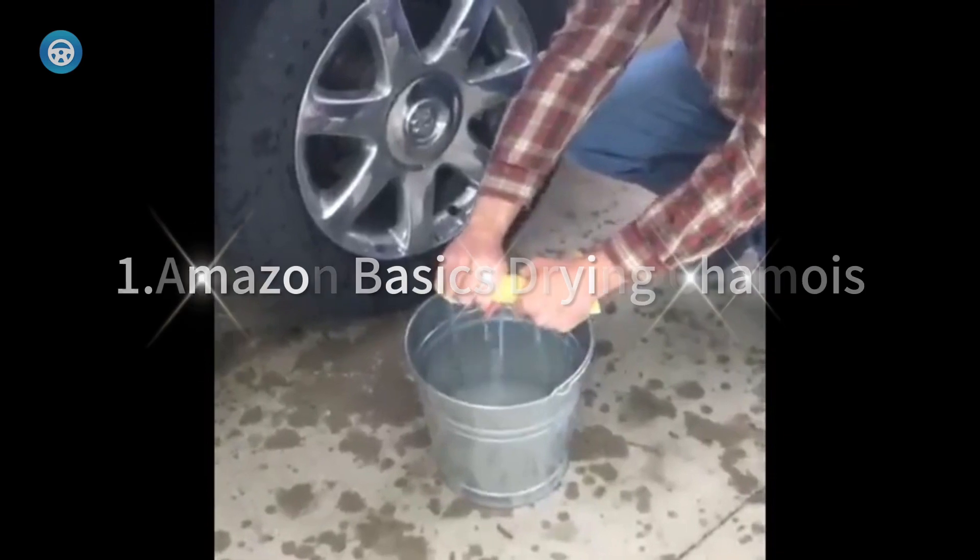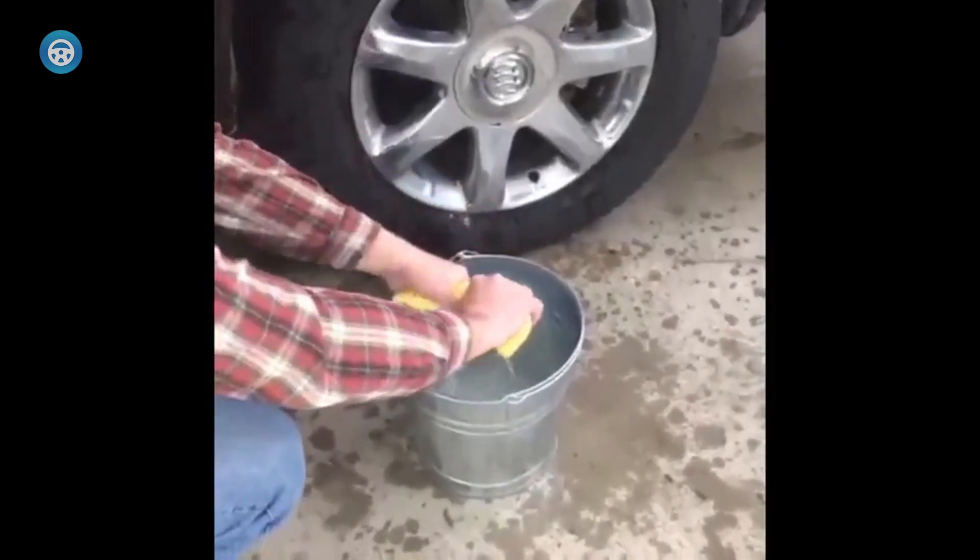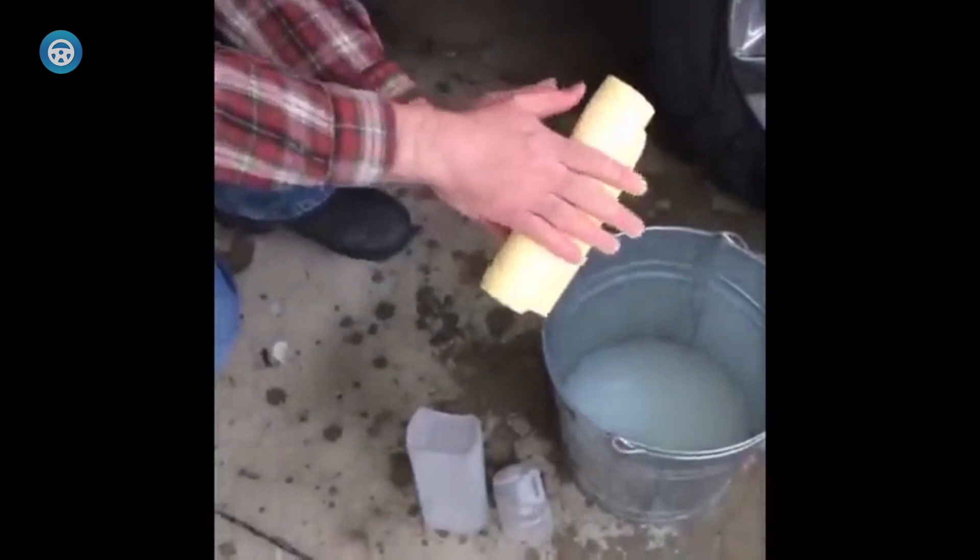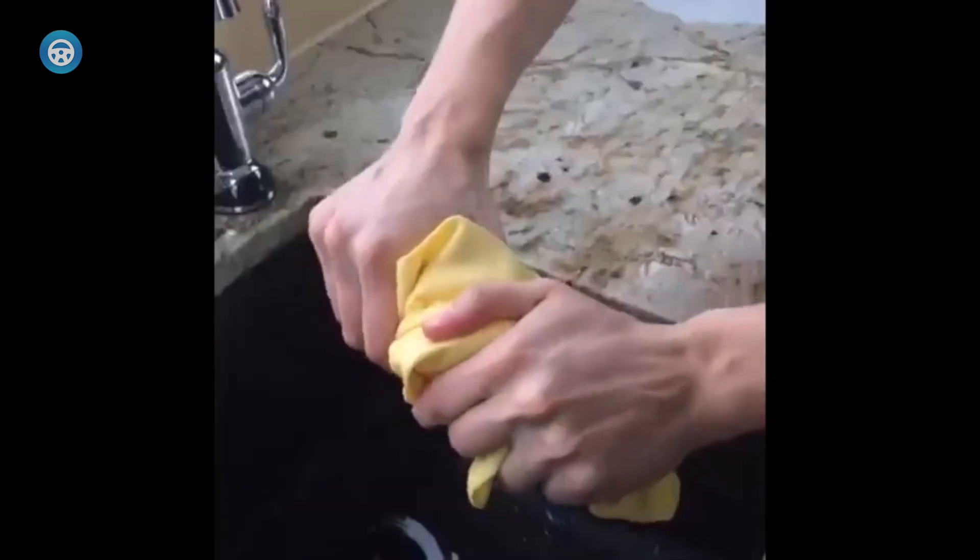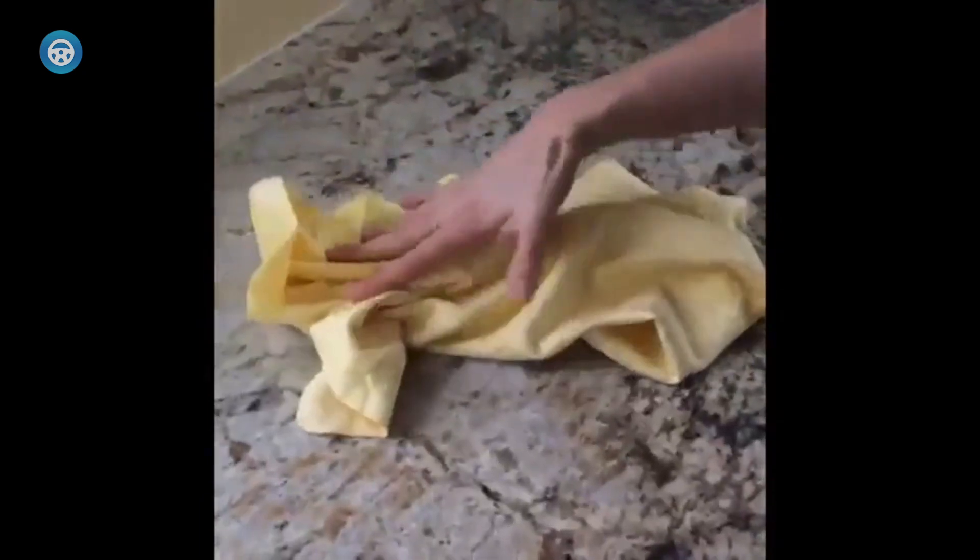Amazon Basics Drying Chamois: Amazon Basics prides itself as a provider of well-built essential items at budget-friendly prices, and this chamois cloth doesn't disappoint. For about $10, you can get this two-pack of chamois cloth for your car.